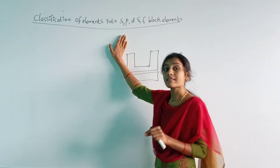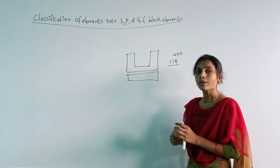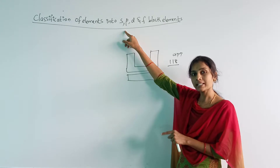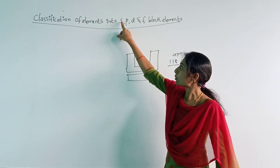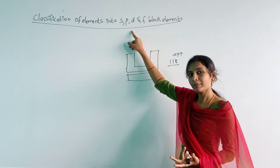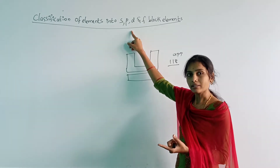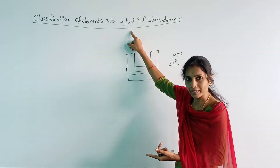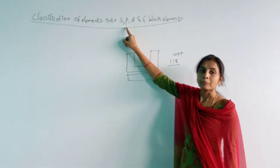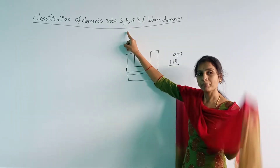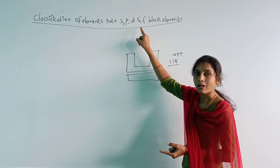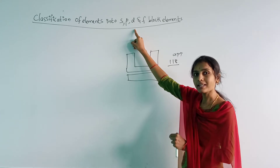If the valence electron is entering into the S orbital of the valence shell, those elements are called S block elements. Similarly, if the valence electron is entering into the P orbital of the valence shell, those are called P block elements. And if the last electron is entering into the D orbital of the valence shell, those elements are named D block elements.